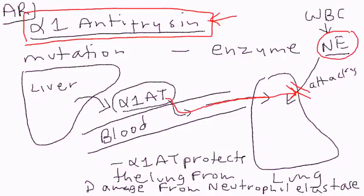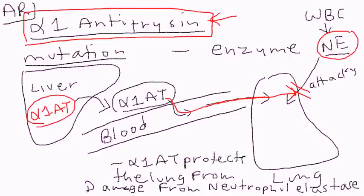Two main things happen as a result of this deficiency. First, the mutation makes it so that alpha-1 antitrypsin cannot go into the bloodstream — it accumulates in the liver. When it accumulates in the liver, it causes liver damage. That is the first component of this disorder.